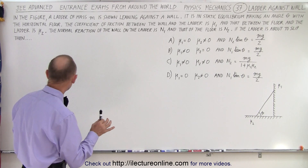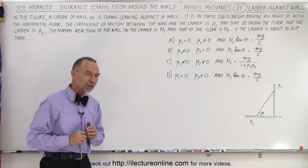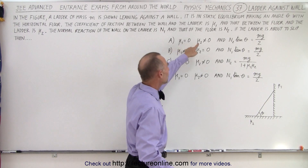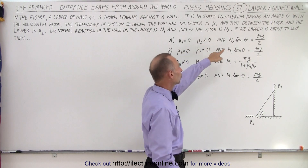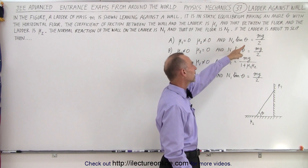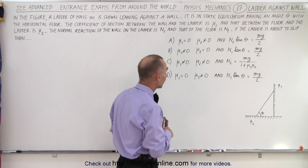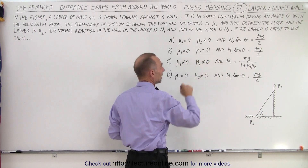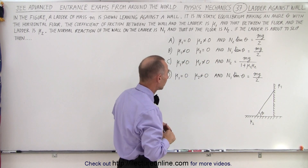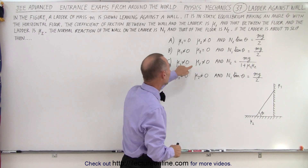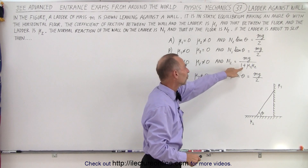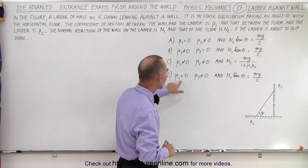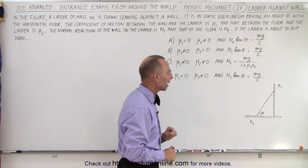If the ladder is about to slip, we have four possible combination answers. For A: mu sub 1 is 0 and mu sub 2 is not 0, and we need to show that N2 times tangent theta equals Mg over 2 under those conditions. For B: mu sub 1 is not 0 but mu sub 2 is 0, and N1 times tangent theta equals Mg over 2. Then C: neither coefficient of friction is 0, and N2 equals Mg over (1 plus mu1 times mu2). And D: mu1 is 0 but mu2 is not 0.